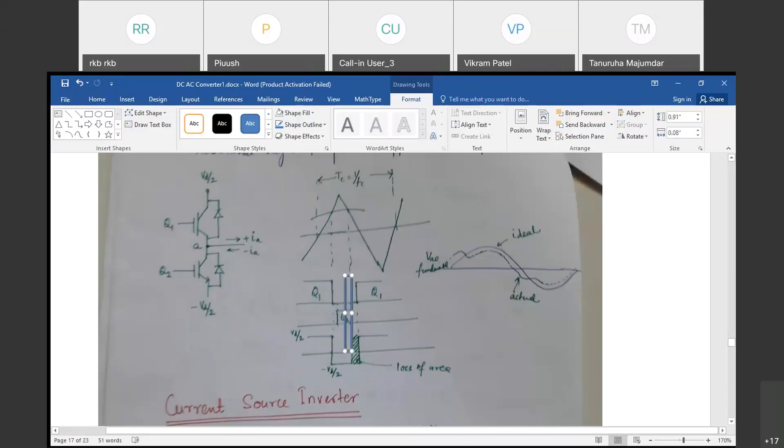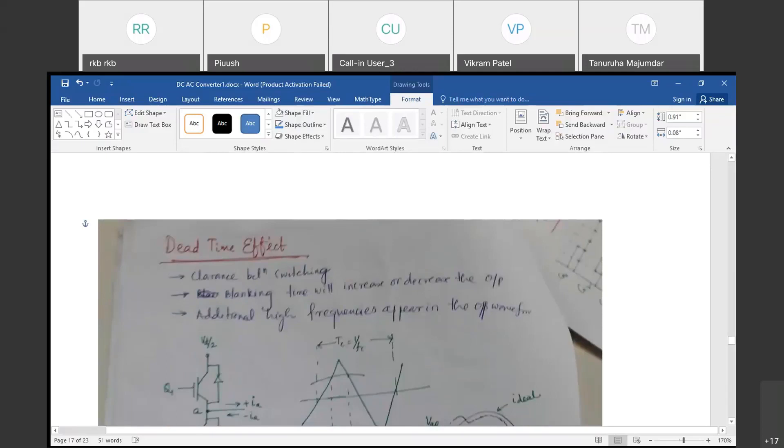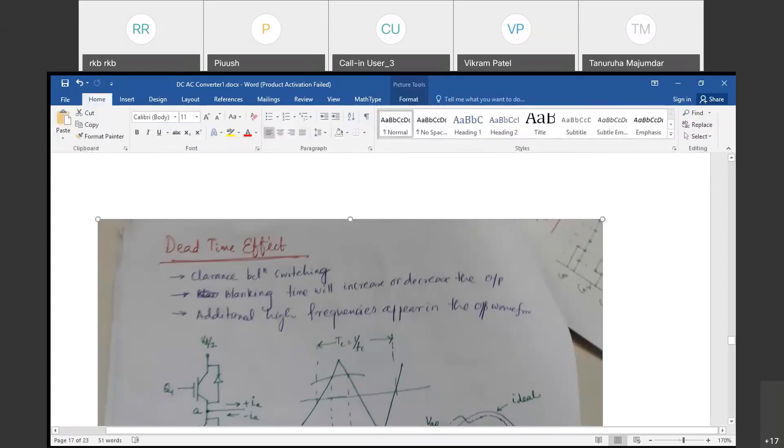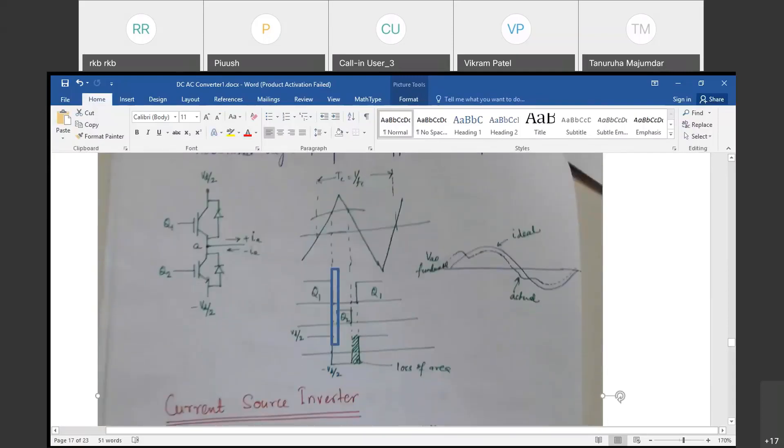That is why we need to give some delay between two switches, and that delay is called the dead time. You can see here. I have drawn here. There is a little delay between two pulses, pulse in the Q1, and pulse in the Q2. There is a small delay between both the switches, so that this period is called the dead time effect, or the clearance time, or the blanking time. You can see here. Here, I have written blanking time, dead time. To switch on this inverter, you need to design this dead time.